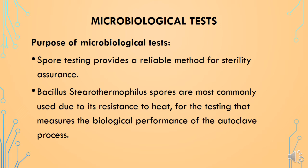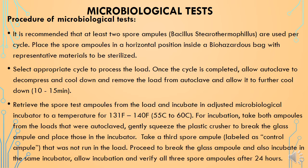The next important qualification test is the microbiological test. This test is done to get sterility assurance for sterilization processes done by the autoclave. Spore testing provides a reliable method for sterility assurance. Bacillus stearothermophilus spores are most commonly used due to their resistance to heat. It is recommended that at least two spore ampoules of Bacillus stearothermophilus are used per cycle. Place the spore ampoules in a horizontal position inside a biohazardous bag with the representative materials to be sterilized. Select the appropriate cycle to process the load.